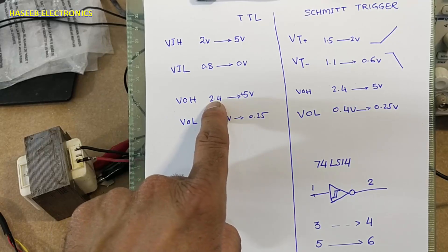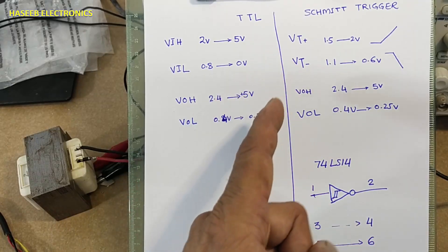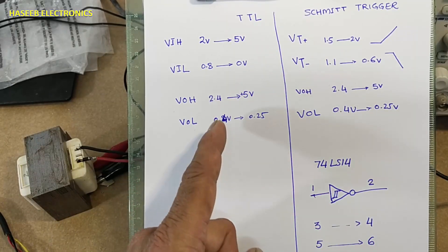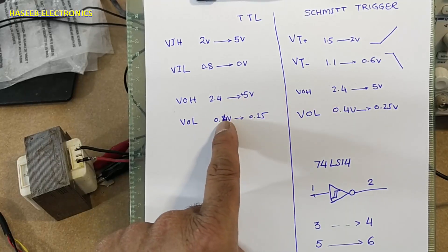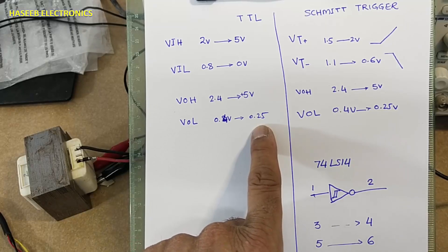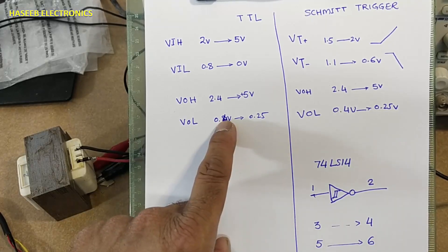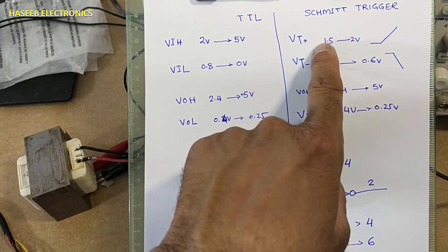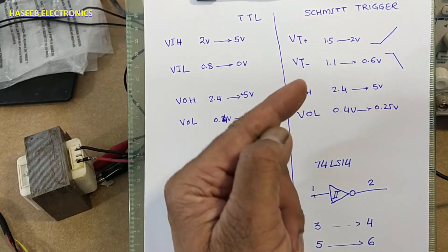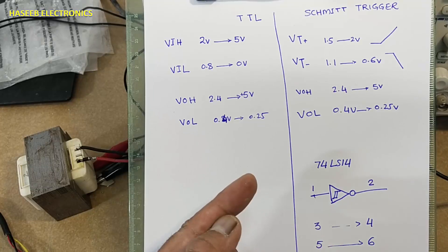When IC will give high output, 2.4 volts up to 5 volts, that is output voltage VOH. Output voltage low VOL is 0.4 volts and minimum 0.25. So these are voltage levels. But here when we have varying amplitude signal, any signal that is varying its amplitude is increasing - any sine signal, any ramp signal, sort of signal.